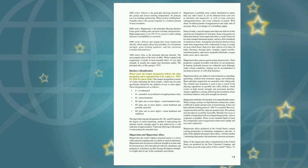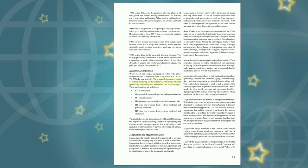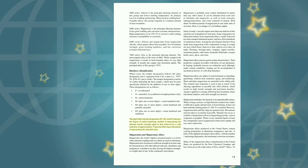Hardness identification: The temper designation follows the alloy designation, separated from it by a dash (e.g., 7075-T6, 2024-T4). The temper designation consists of a letter indicating the basic temper, which may be more specifically defined by one or more digits. Designations include: F (as fabricated), O (annealed, recrystallized—wrought products only), H (strain hardened): H1 plus one or more digits (strain hardened only), H2 plus one or more digits (strain hardened and partially annealed), H3 plus one or more digits (strain hardened and stabilized). The digit following H1, H2, and H3 indicates the degree of strain hardening. Number 8 represents the ultimate tensile strength achieved by a cold reduction of approximately 75% following a full anneal; zero represents the annealed state.